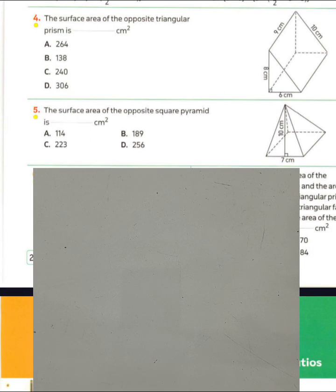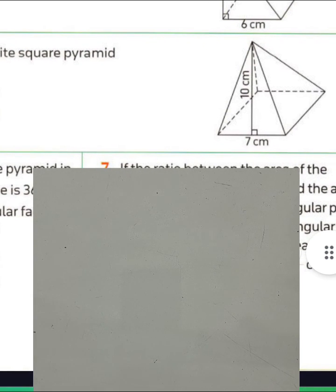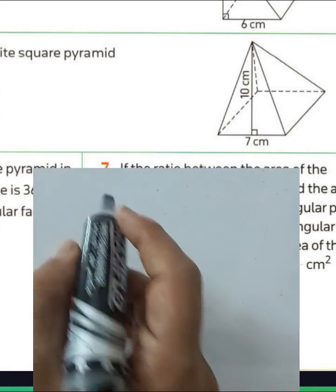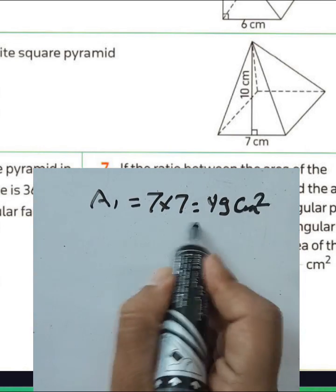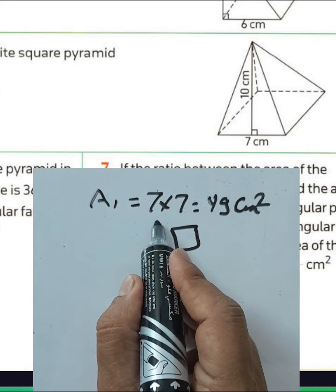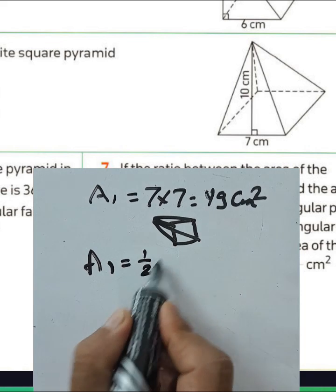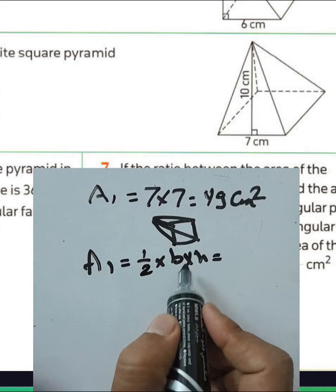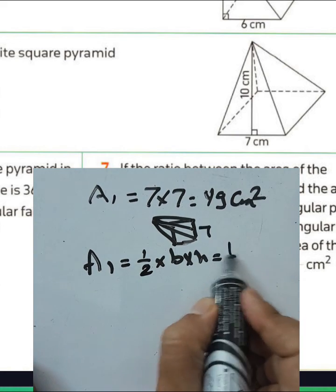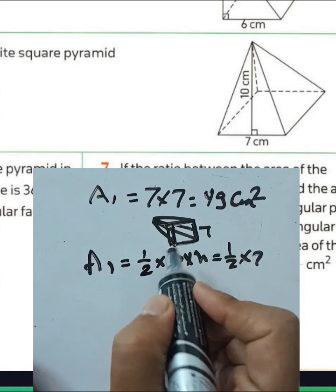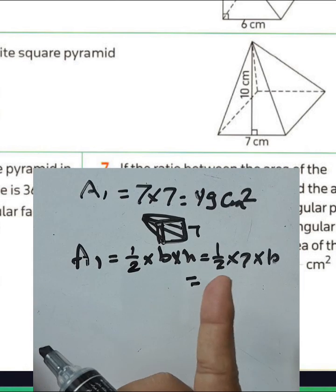Question number five: find the surface area of the square pyramid shown. First, find the area of the base: the base is a square with side length seven, so the area is seven times seven equals 49 square centimeters. Then we have four congruent triangles. The area of each triangle is one-half times base times height, where the base of each triangle is seven centimeters.